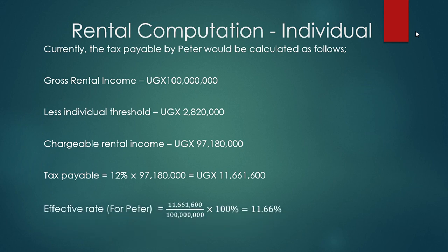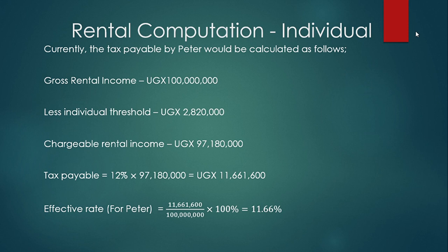We can also look at the effective rate. Peter's effective rate is tax over gross rental income, which is about 11.66 percent. Please note the effective rate can vary from taxpayer to taxpayer, especially where there is a flat deduction. Even if a taxpayer has a rental income of 10 million or 10 billion, the deduction is fixed at 2,820,000 shillings, so the impact on the overall tax percentage will vary depending on the proportion that the threshold represents.